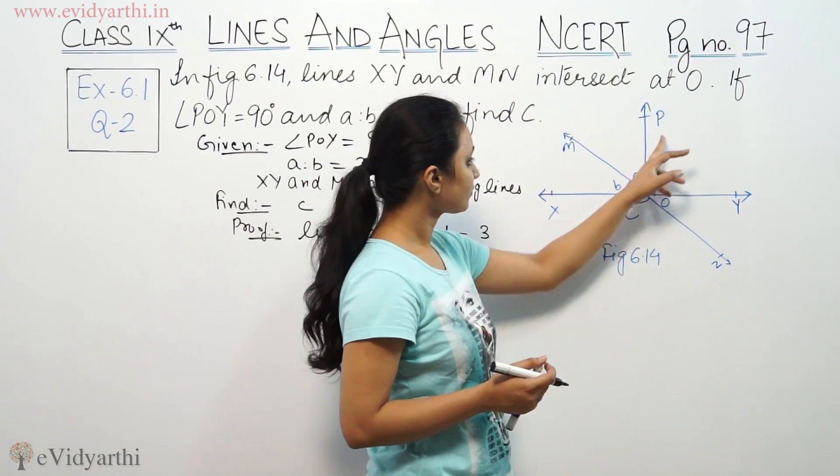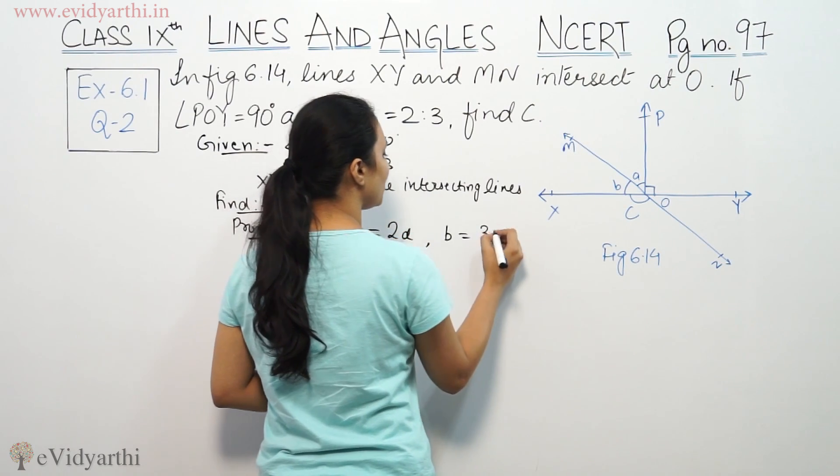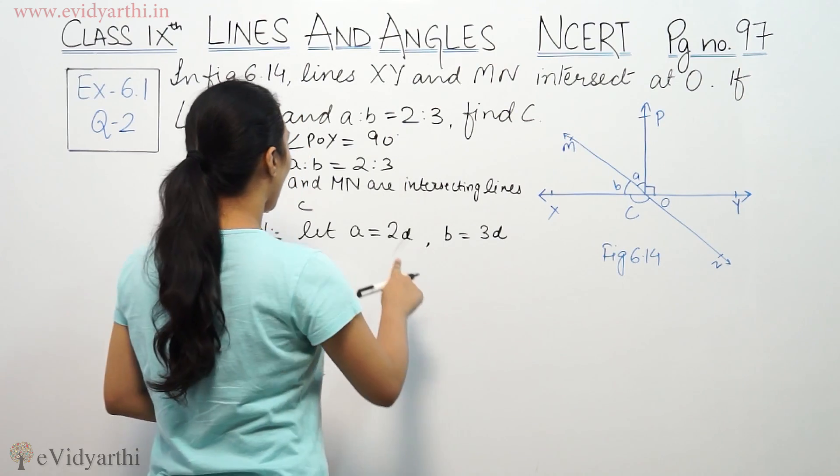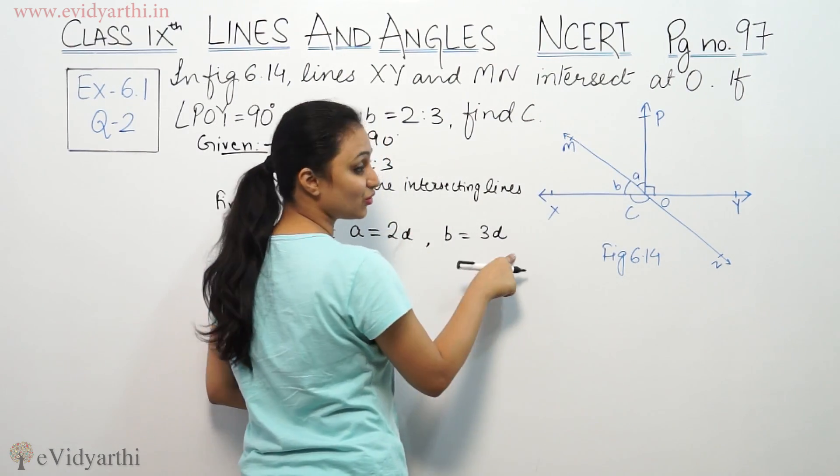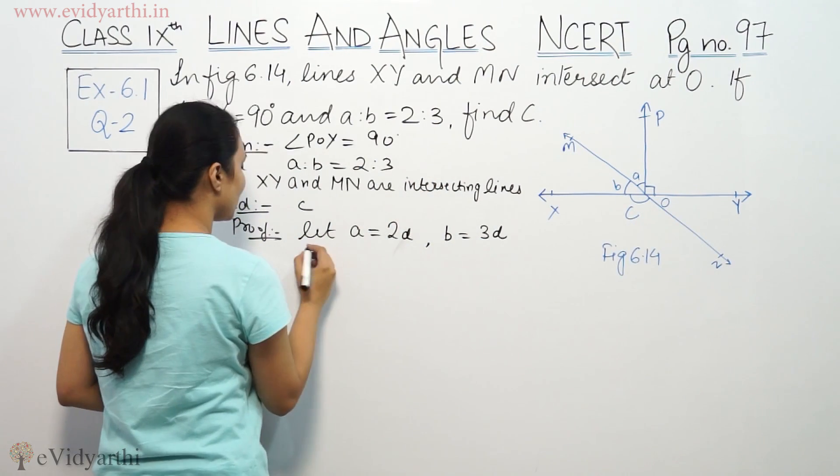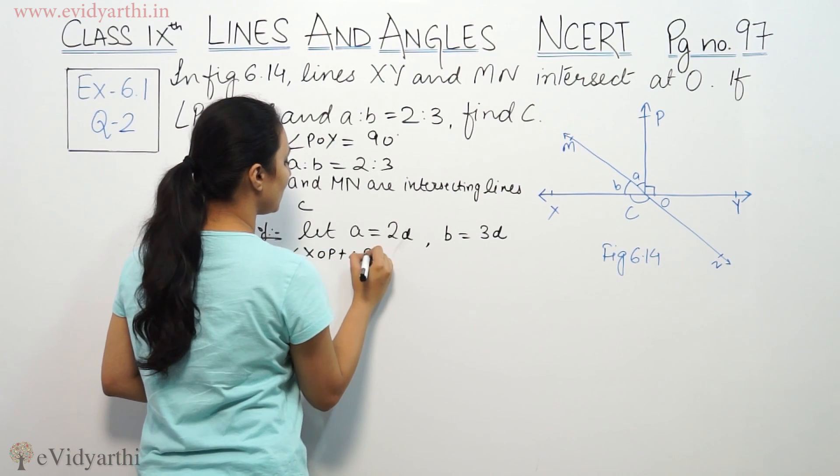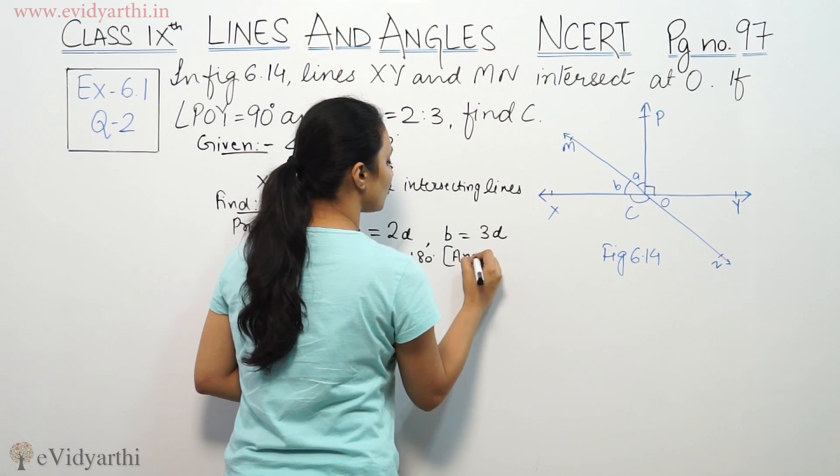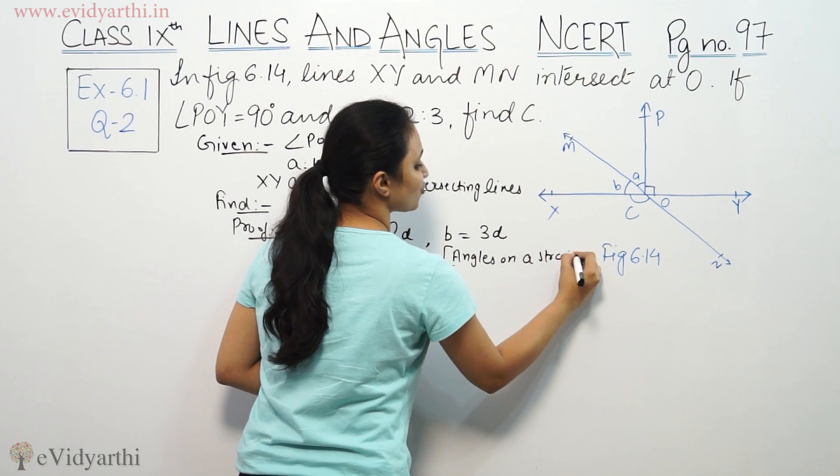Now, since a to b is 2 to 3 and we have straight line XOY, angle XOP plus angle POY equals 180 degrees. Angles on a straight line sum to 180 degrees.